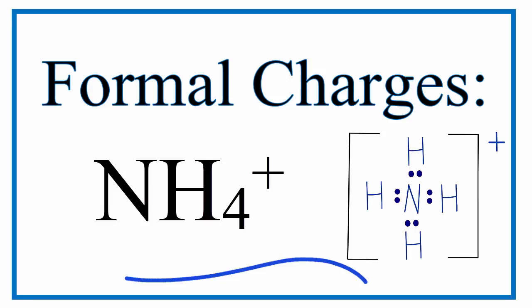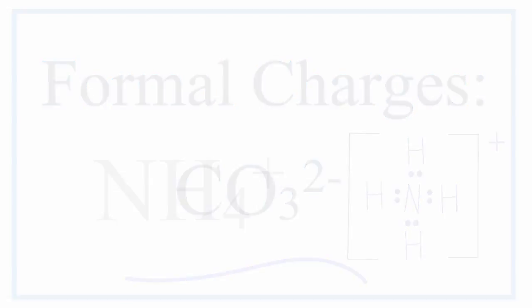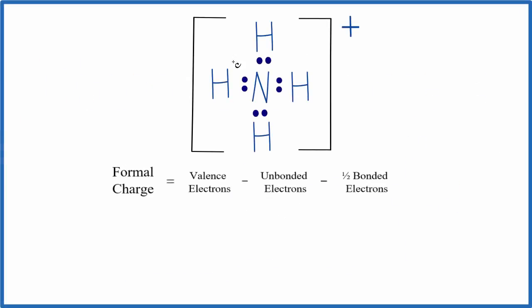To calculate the formal charge for each atom in the ammonium ion, NH4+, let's look at the Lewis structure here. We can see that each hydrogen has two valence electrons, so it is satisfied. And then the nitrogen in the middle has eight, it has an octet, and that's okay too. So it looks like a good Lewis structure, but let's check out the formal charges.